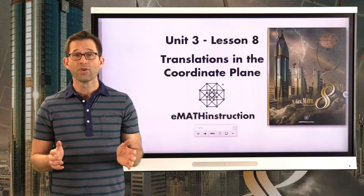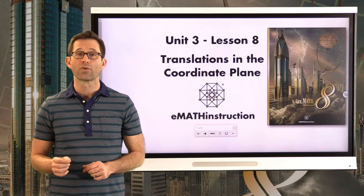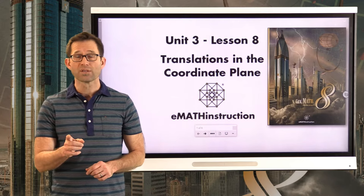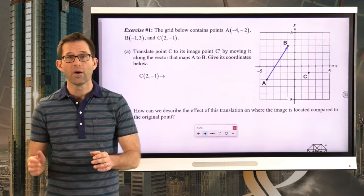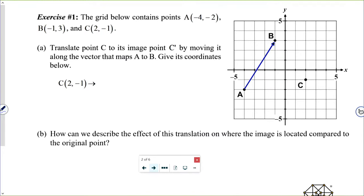Let's get right into exercise one and take a look at a translation — otherwise known as a shift — in the coordinate plane. The grid below contains points A(−4, −2), B(−1, 3), and C(2, −1). Letter A asks us to translate point C to its image C prime by moving it along the vector that maps A to B, and give its coordinates.